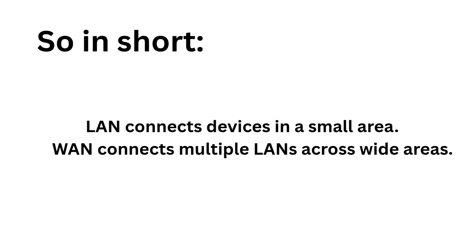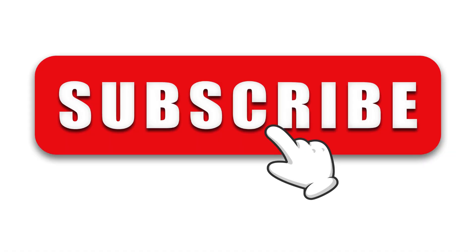So to sum it up: LAN connects devices within a small local area like your home, school, or office. WAN connects multiple LANs across large distances, even between cities or countries. Together they form the backbone of how data moves around the world.